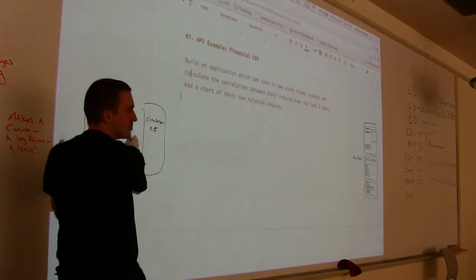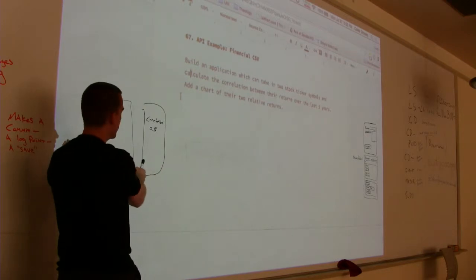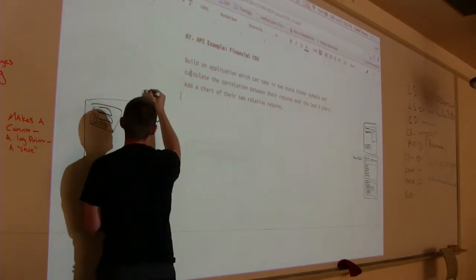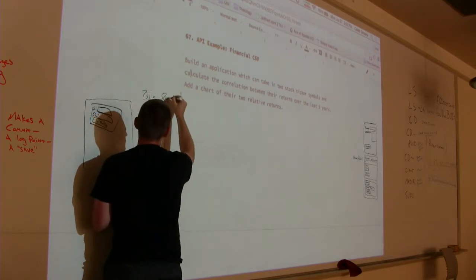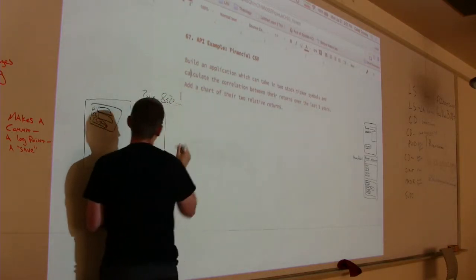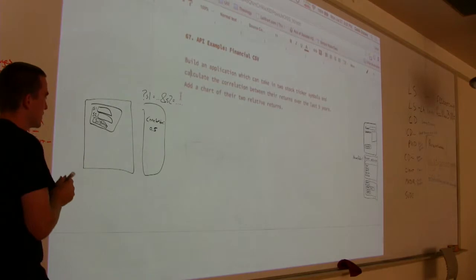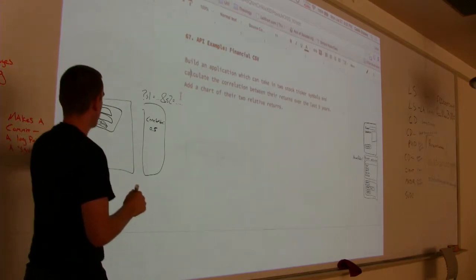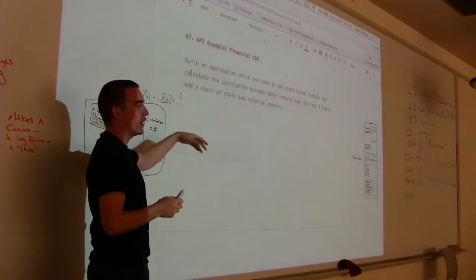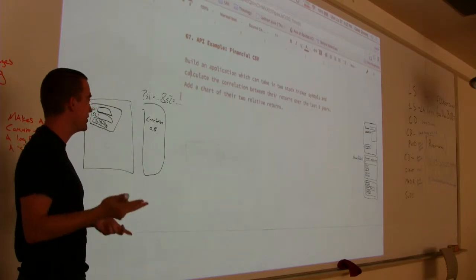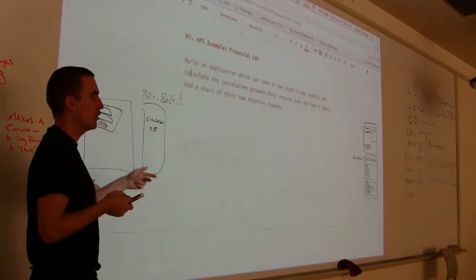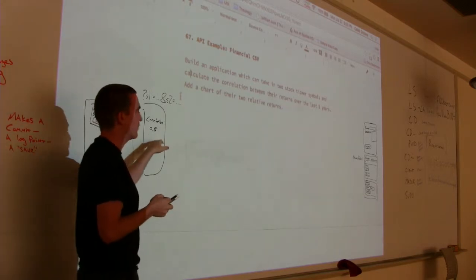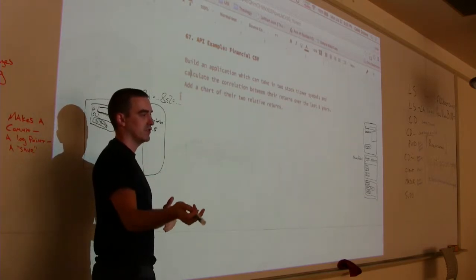Correlation is a useful thing when you're doing financial stuff because it can tell you, for example, if you're trying to have a diverse portfolio, like I want stocks that are different. If they behave differently, I can use correlation that will make that kind of decision. Anyway, correlation is an easy function for us to calculate. We will add that function later.